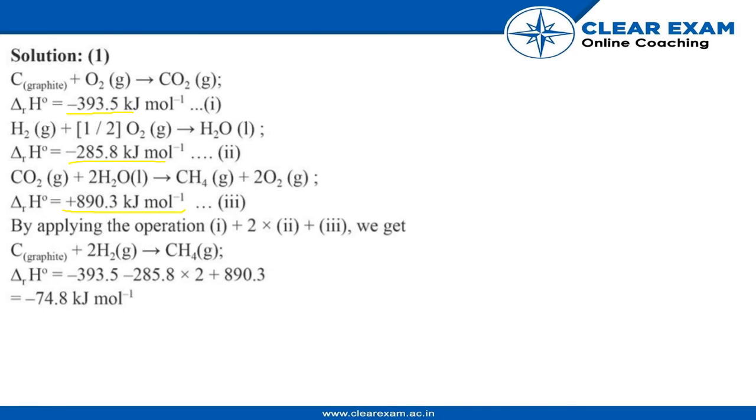Now, by applying the operation - that is equation 1 plus 2 times equation 2 plus equation 3 - we are going to get carbon in graphite form plus 2H2 giving us CH4. And the delta H will be simply